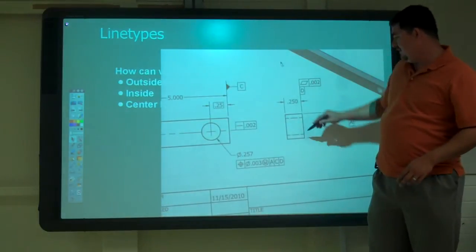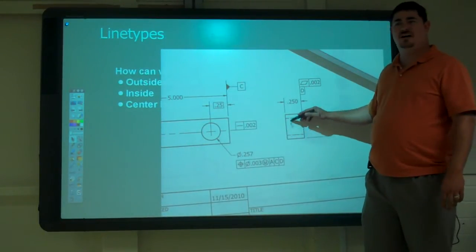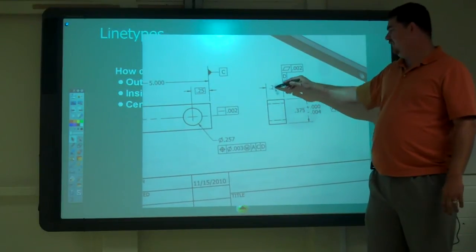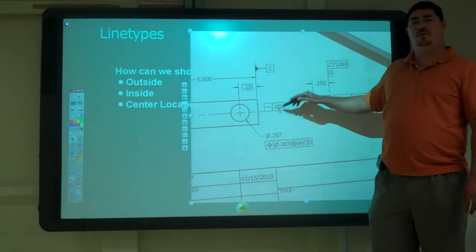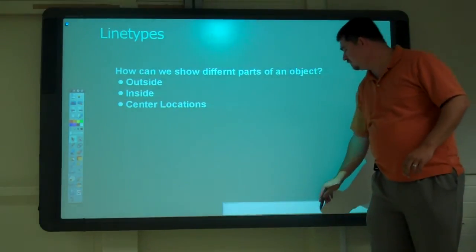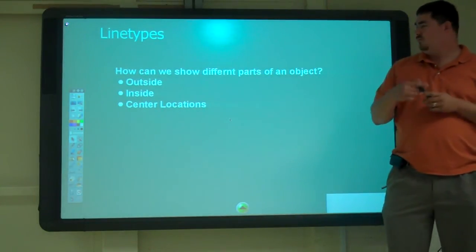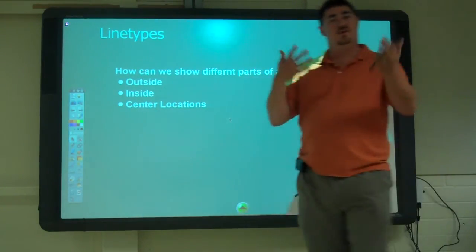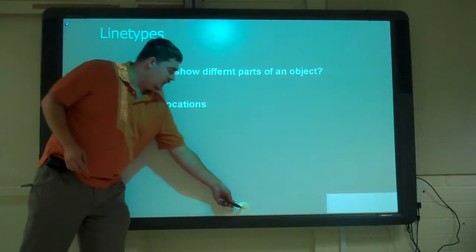And then center locations, and I didn't put one here. People in this class are supposed to catch some things like that. But I've got center lines here for that part to show where their centers are connected. Center lines, again another kind of a dashed line, another thin line. So that's called the alphabet of lines.